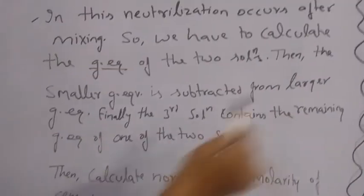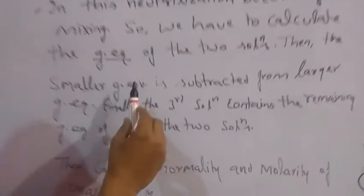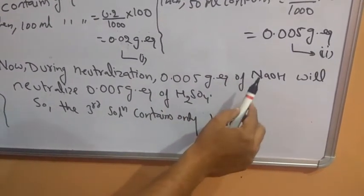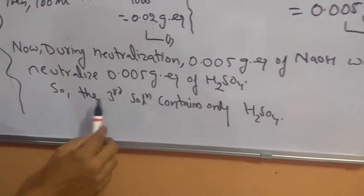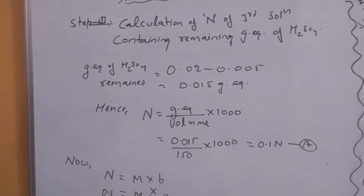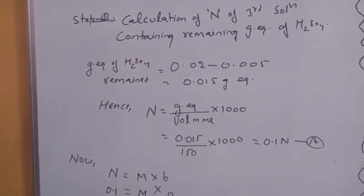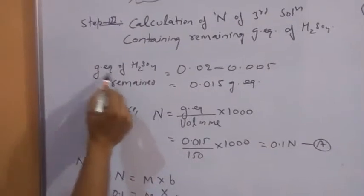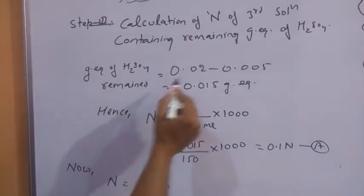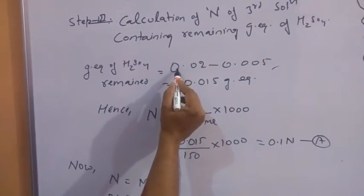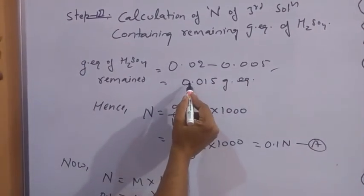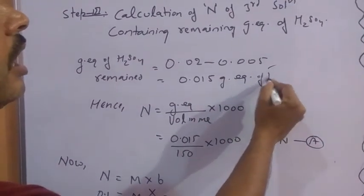Previously I told you that you have to subtract the smaller gram equivalents from the larger gram equivalents because neutralization occurs. During neutralization, the smaller one is 0.005 gram equivalents of NaOH. This will neutralize the same amount of H₂SO₄. So the third solution contains only H₂SO₄. Total gram equivalents of H₂SO₄ present was 0.02, and 0.005 has been neutralized, so the solution will contain 0.015 gram equivalents of H₂SO₄.